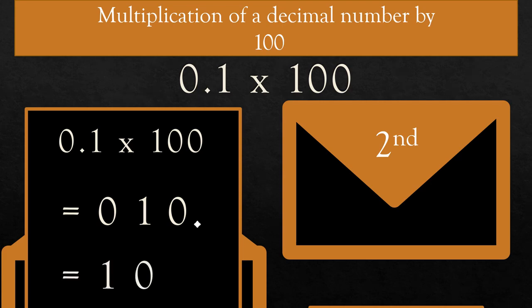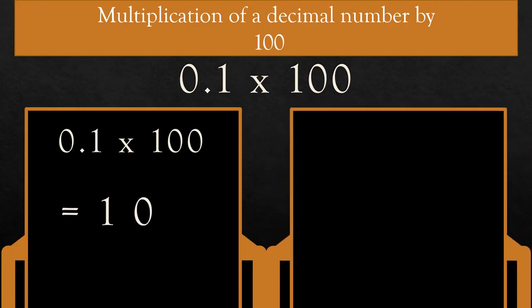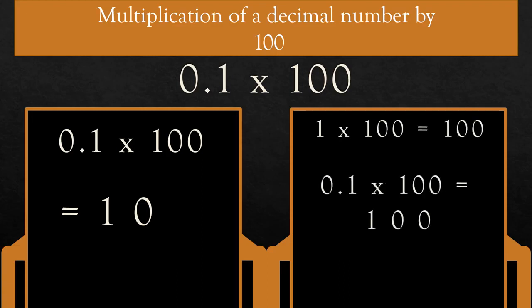Or in another way: multiply 0.1 × 100, ignoring the decimal point. Everyone knows 1 × 100 is equal to 100. Now, how many digits after the decimal in 0.1? Yes, one. So count one digit from the right and place the decimal in the product. So the answer is 10.0, that is 10.